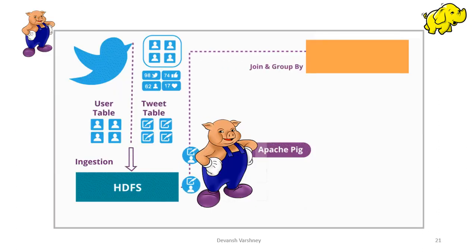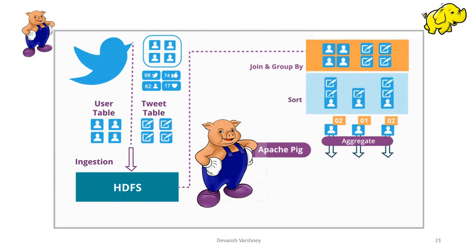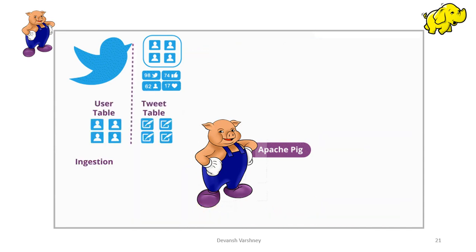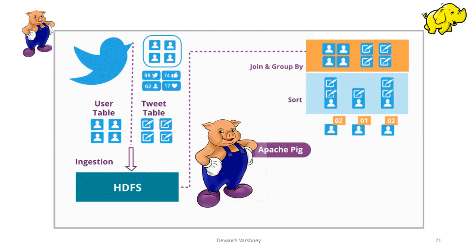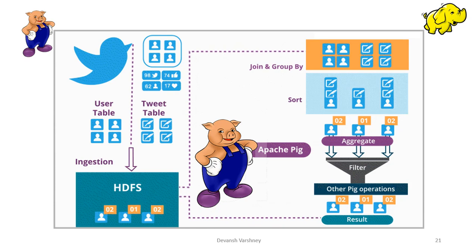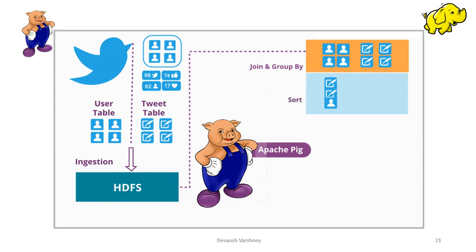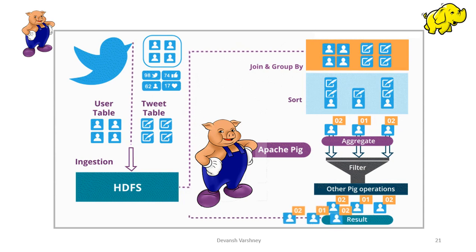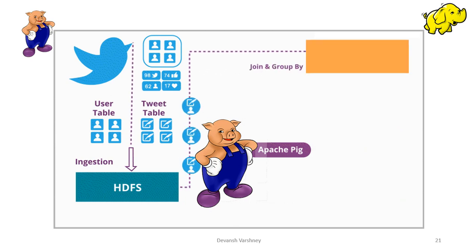Apache Pig is one of the most important parts of Hadoop. Pig provides a high-level language known as Pig Latin — a SQL-like language with many built-in operators for performing data operations such as joins, filters, ordering, and so on — used to perform all data manipulation operations in Hadoop. The component of Apache Pig is Pig Engine, which ingests Pig Latin scripts as input and converts them into MapReduce jobs. As a tool, it is very efficient, reducing development and coding time.